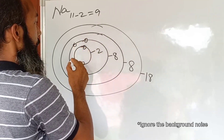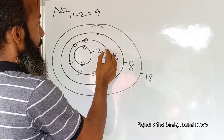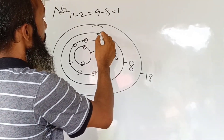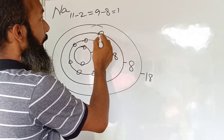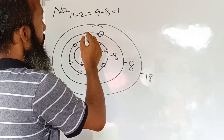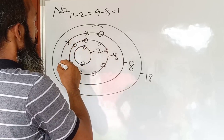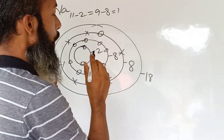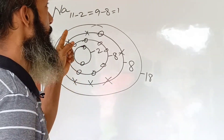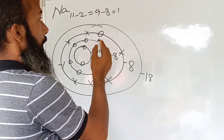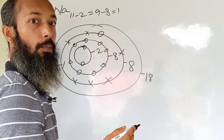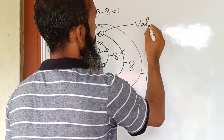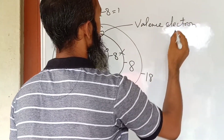Out of the nine remaining electrons, eight enter the second shell, and now only one electron is left. This one electron will enter the third shell, which has a capacity to occupy eight electrons, but only one enters. Seven places lie vacant. The number of electrons present in the outermost shell is called the valence electron. For sodium, the valence electron count is one.